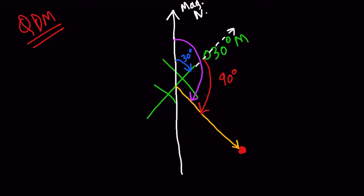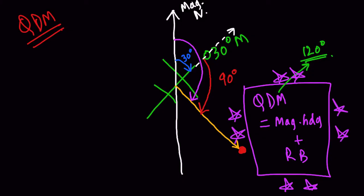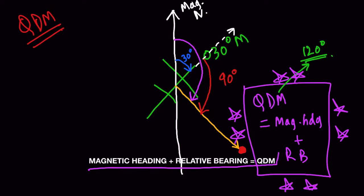QDM is nothing but the sum of the magnetic heading and the relative bearing. So QDM equals magnetic heading of 030 degrees plus relative bearing of 090 degrees, which comes out to be 120 degrees for this situation. This formula is very important for numericals: QDM equals magnetic heading plus relative bearing. If we want to go to the station we need to track the QDM.